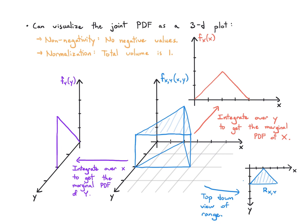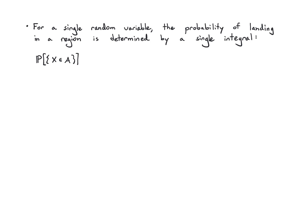This can all be pretty tricky if you're not comfortable with multivariable calculus, but all of the concepts are the same as in the single variable case. Just to refresh: for a single random variable, the probability of landing in a specific region is determined by a single integral. I say I'm interested in knowing when x falls into a region A, so I integrate the PDF of x over A. Here is my PDF, here's a region A, I just figure out the area of this region using an integral, and that's my probability.